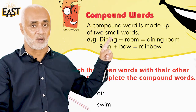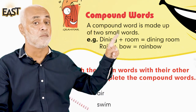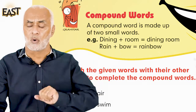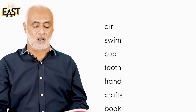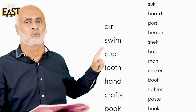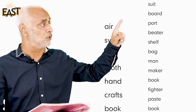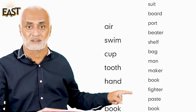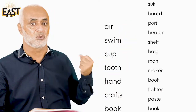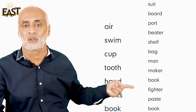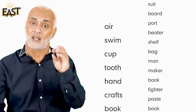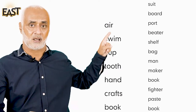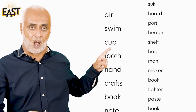And when you join train and bow it becomes rainbow. Now here are some words and you are going to find the right match for these words from a list and make new words. You're going to write all these words in your copy first and then make new words.